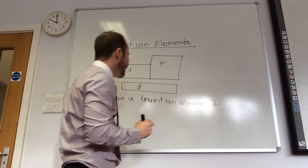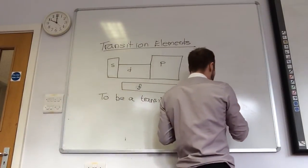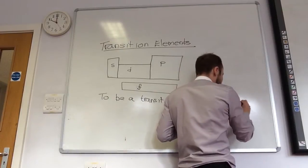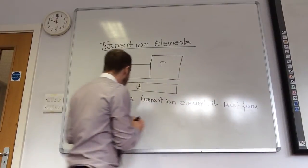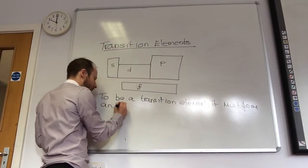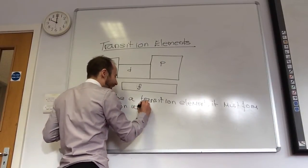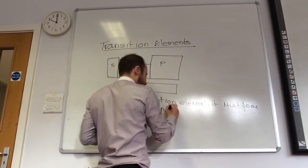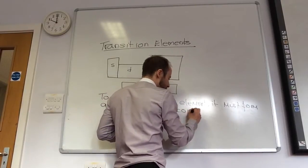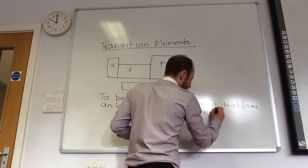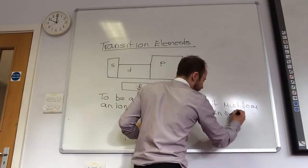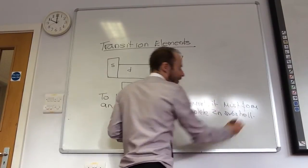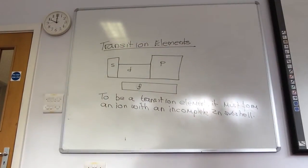To be a transition element, it must form an ion with an incomplete D subshell. So, to be in the gang, it's got to have the ability to do that.